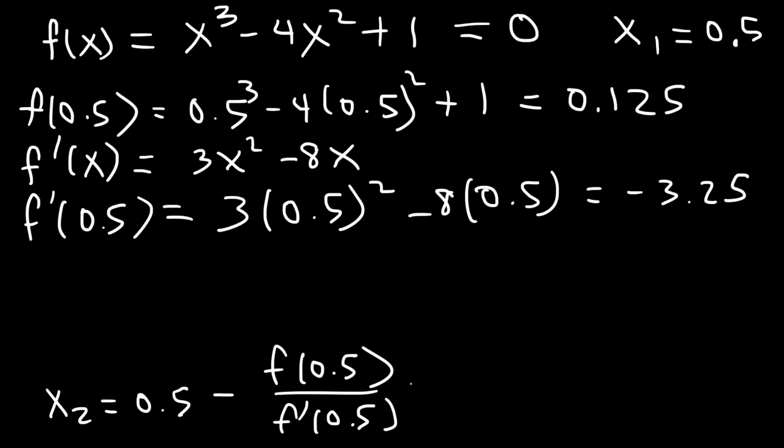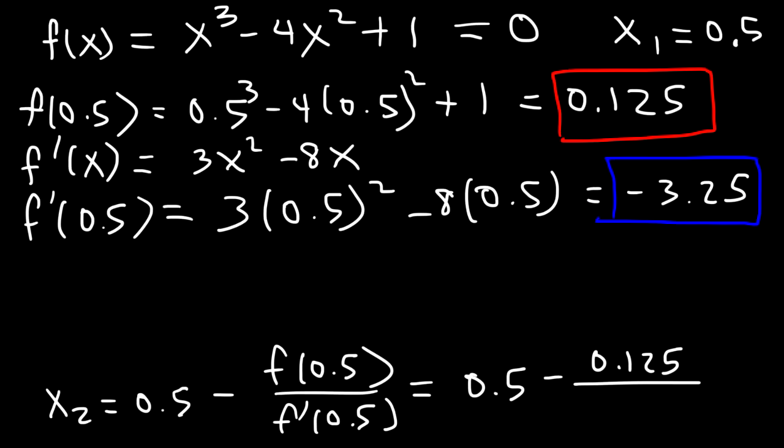Now, let's plug in everything into this equation. So f of 0.5, that's 0.125. And f prime of 0.5 is negative 3.25. So the two negative signs will cancel. So it's 0.5 plus 0.125 divided by 3.25. And so this will give us x2, and so that's going to be 0.5385.